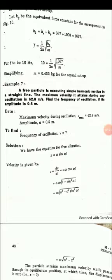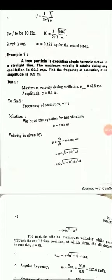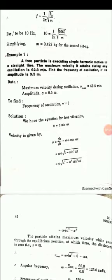Frequency of oscillation f (or nu) is what we need to find. We have the equation for free vibration: x equal to A sin omega t. Velocity is found by differentiating: v equal to dx divided by dt, which gives A omega cos omega t.